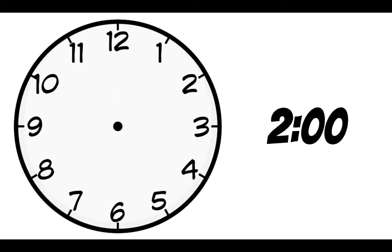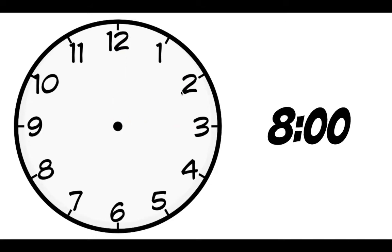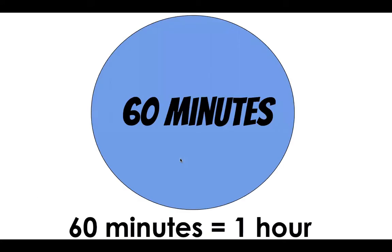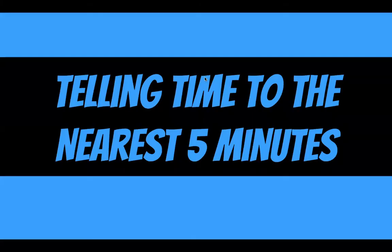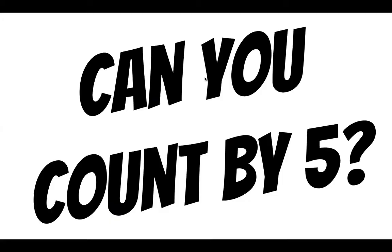The hour hand is the short hand and the minute hand is the long hand. Now, what would two o'clock look like? We know the minute hand points to the very top of our clock. Our hour hand needs to be pointing towards two - that's two o'clock. What about eight o'clock? The minute hand points to the top, and the hour hand is pointing to the eight. Now, a whole hour is 60 minutes long. We're going to work on telling time to the nearest five minutes.